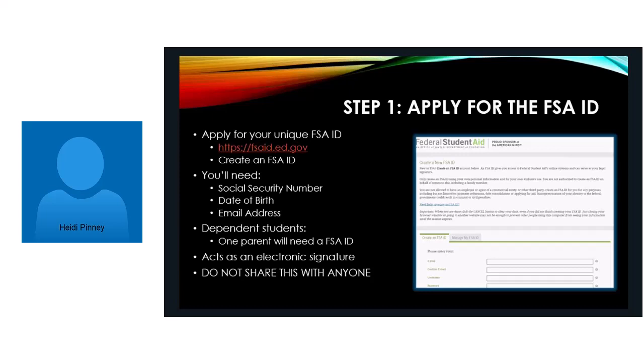If you look on the right-hand side, you'll see that there are two tabs — one that says Create and one that says Manage. Because it's unique to your individual person, you'll need your Social Security number, your date of birth, and a unique email address. I keep saying unique because a parent needs one and the student needs one.